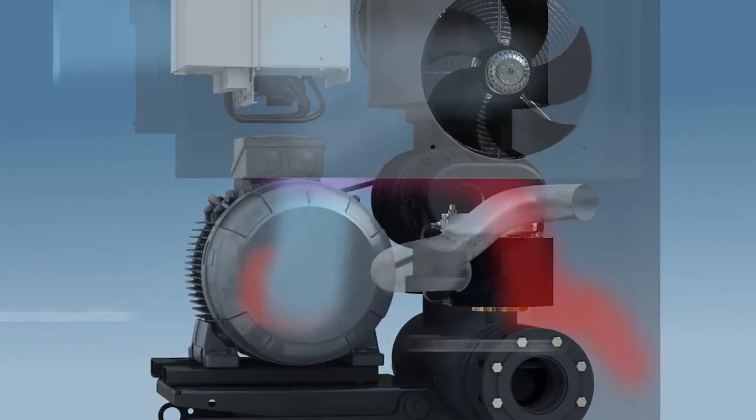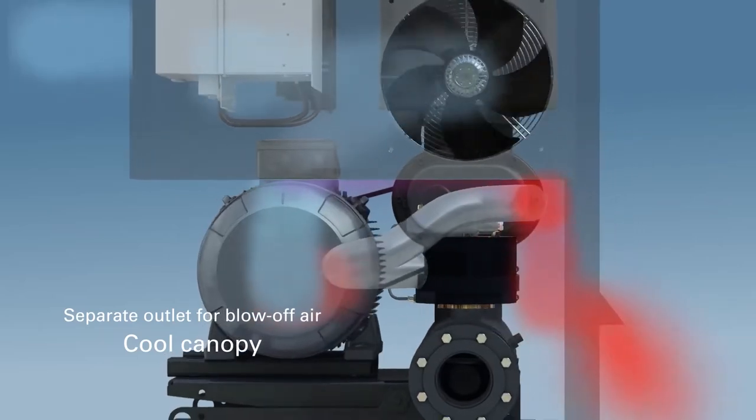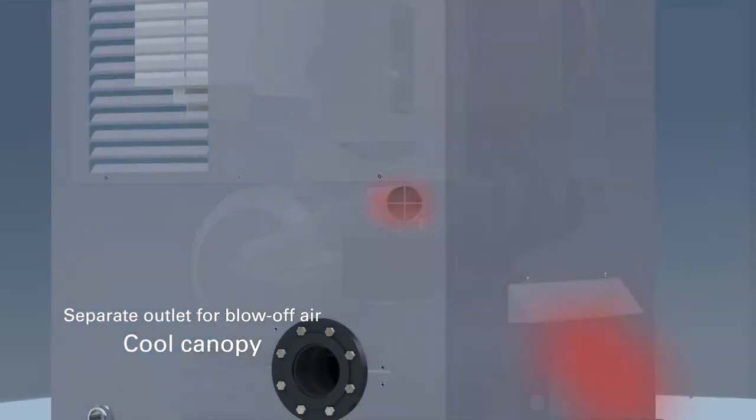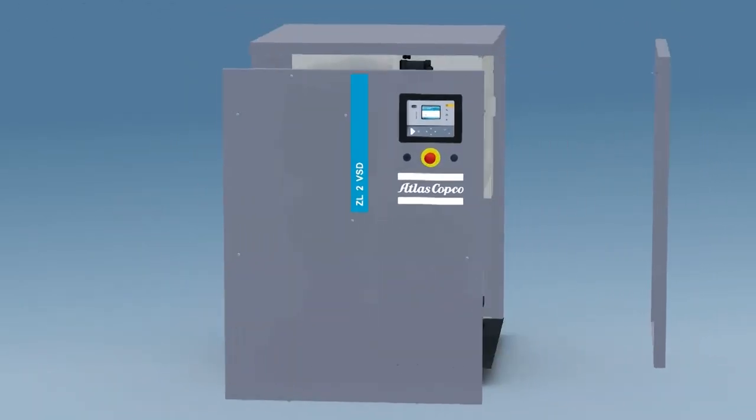Our cool canopies exhaust the heat from the blower and controls through a common discharge. This allows you to duct the hot exhaust outside, reducing your building cooling load in summer.